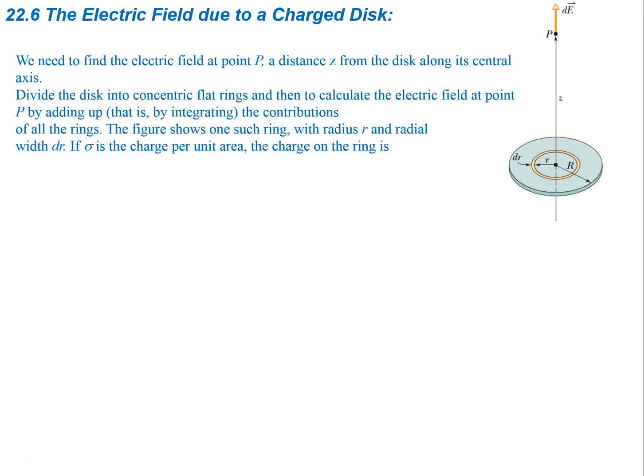So we need to find the electric field at point P a distance z from the disk along the central axis. We're going to divide the disk into concentric flat rings and then calculate the electric field at point P by adding up, by integrating, the contributions from all the rings. The figure shows one such ring, radius r, radial width dr.